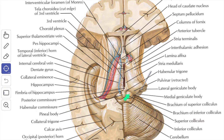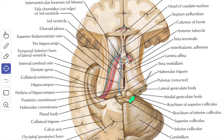The superior colliculus is connected to the lateral geniculate body through the superior brachium, or the brachium of the superior colliculus. The inferior colliculus is connected to the medial geniculate body through the inferior brachium, or the brachium of the inferior colliculus. So: superior colliculus → superior brachium → lateral geniculate body; inferior colliculus → inferior brachium → medial geniculate body.